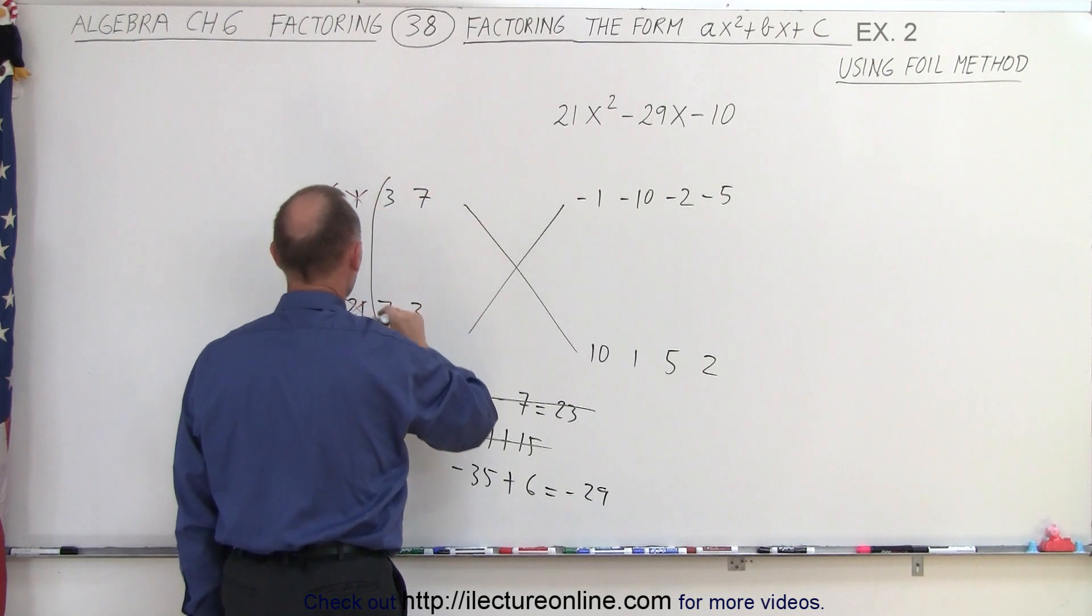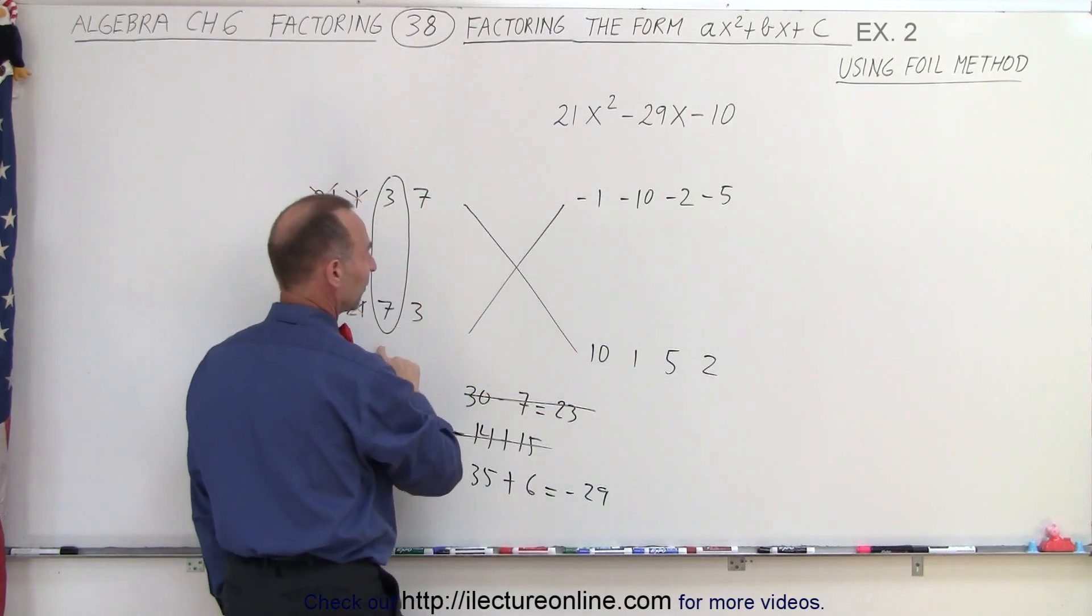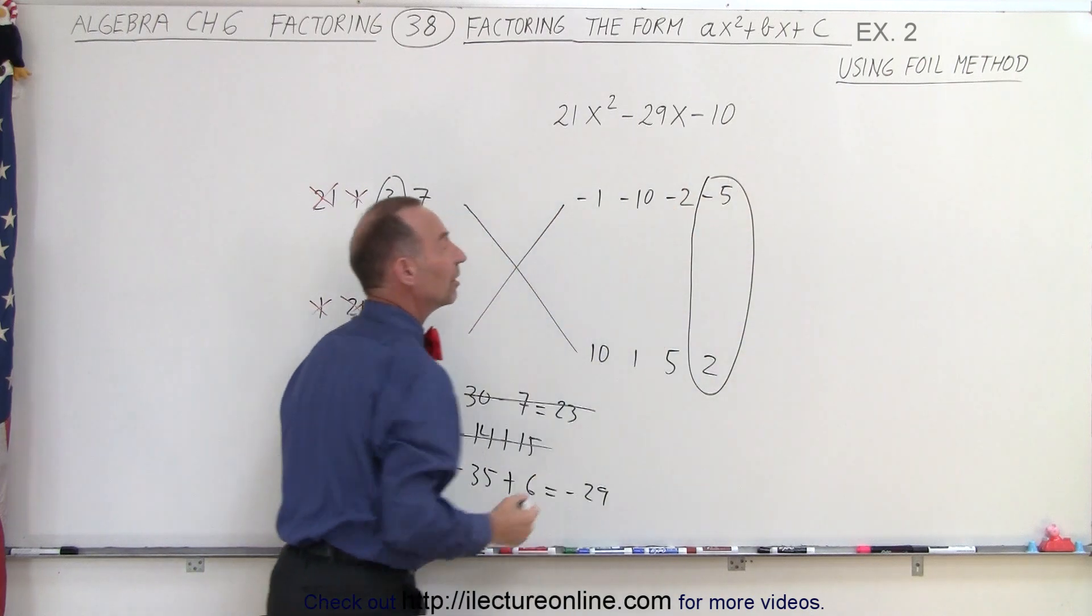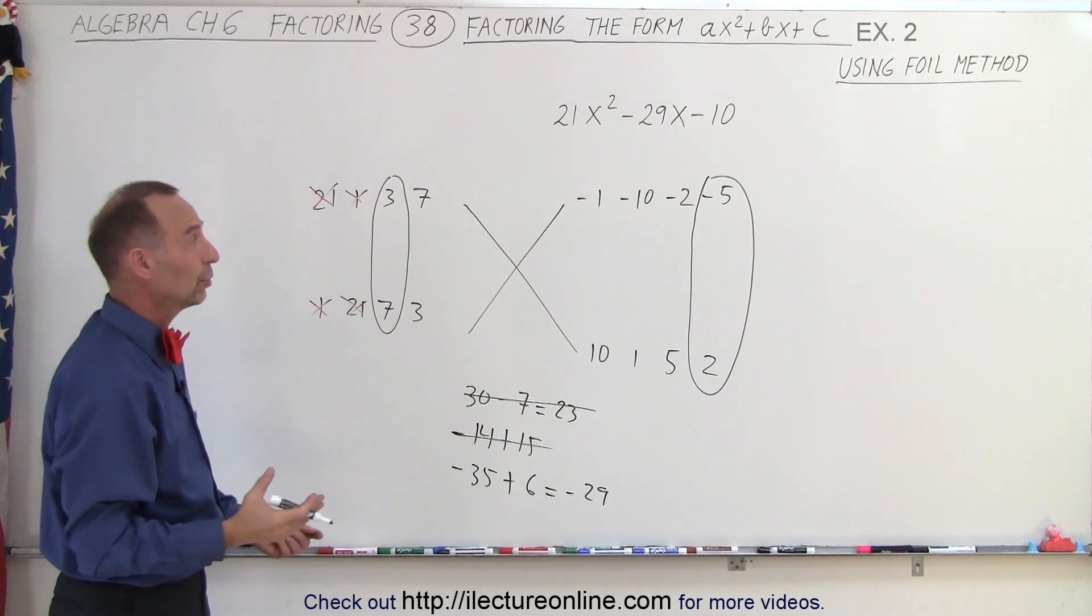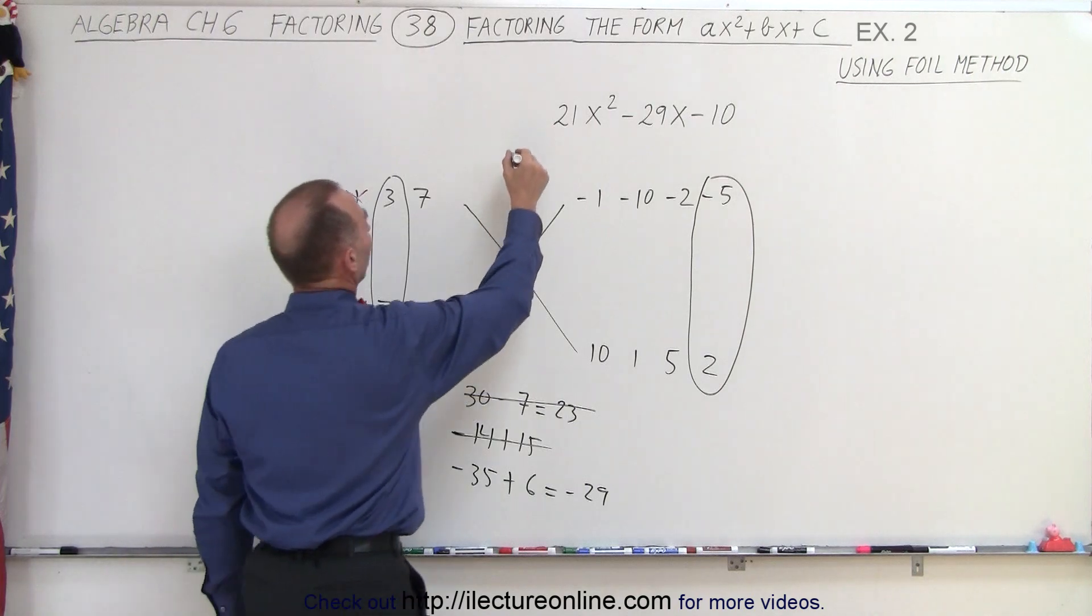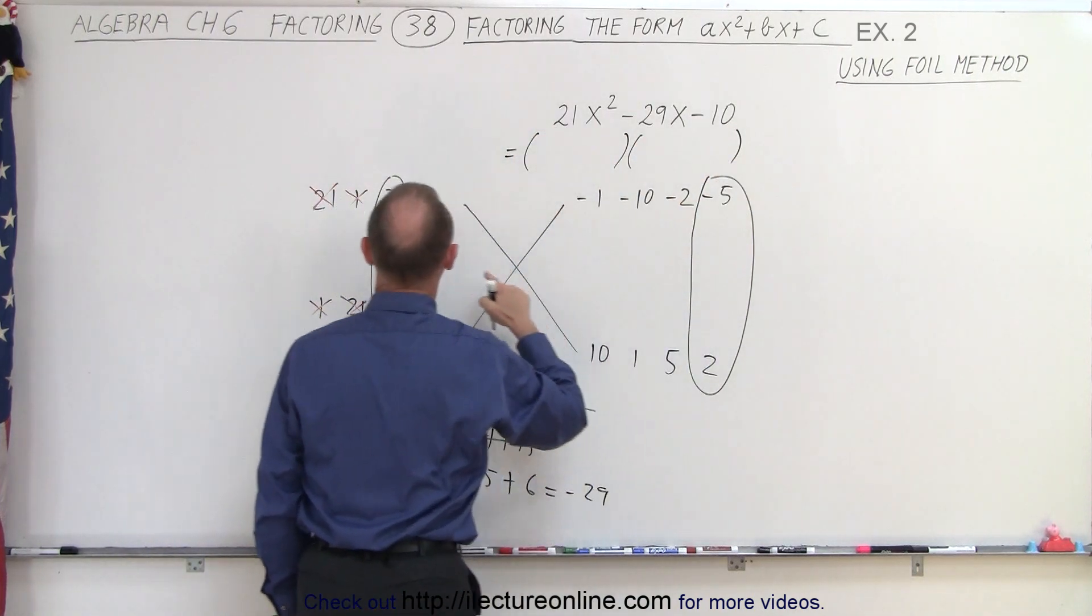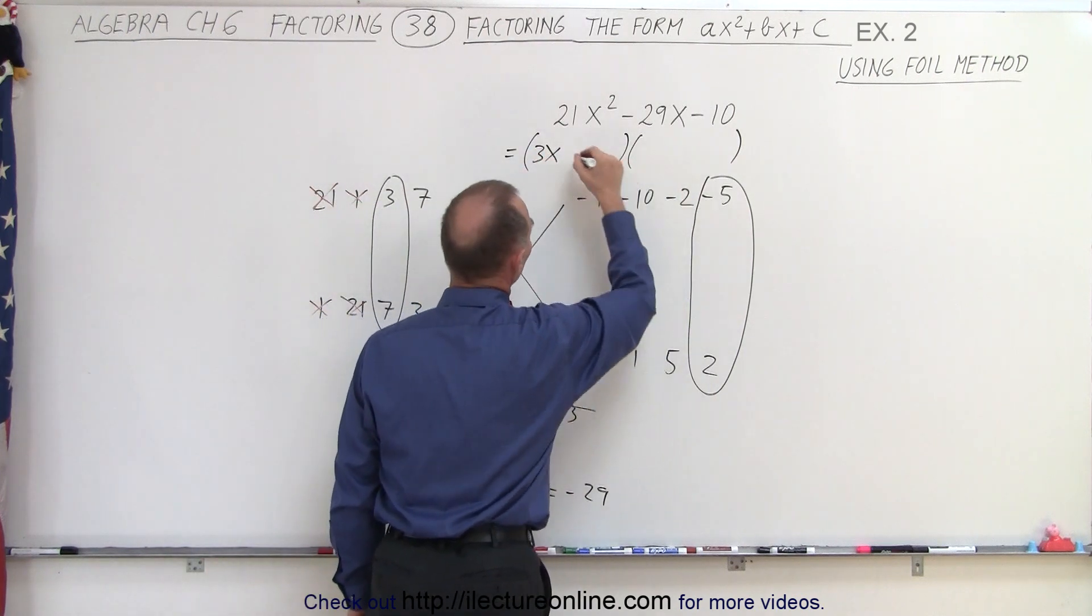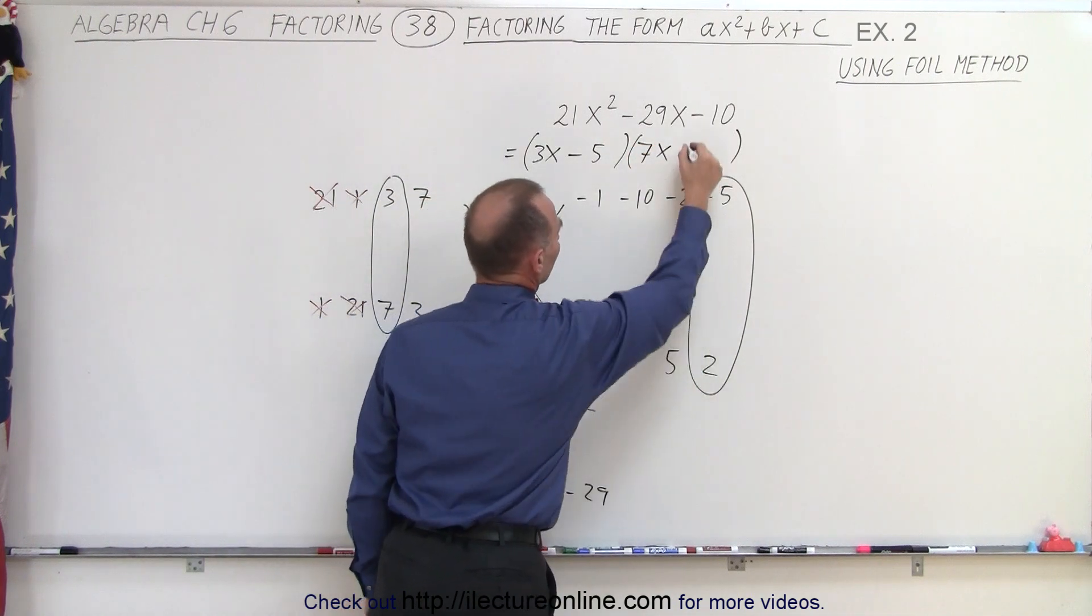So that means that this combination, 7 times negative 5 and this combination, was the right combination of numbers that give us the correct middle term. Now all we have to do is use those coefficients in our binomials. And so we can write this as the product of two binomials: 3x minus 5, and 7x plus 2.